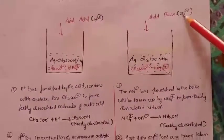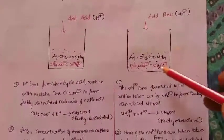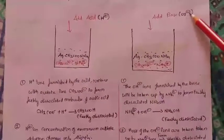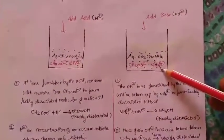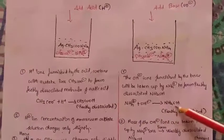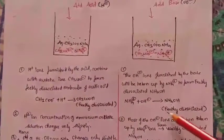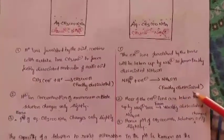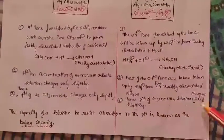So when we add base to the ammonium acetate solution, what will happen? The OH⁻ ions will be taken by the NH4⁺ ions — opposite charges, minus and plus. This OH⁻ ion from the strong base is taken by the NH4⁺ ions to form a weakly dissociated ammonium hydroxide: NH4⁺ + OH⁻ → NH4OH. This ammonium hydroxide is weakly or feebly dissociated.